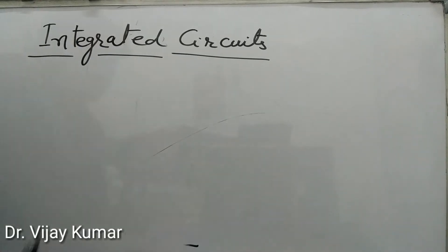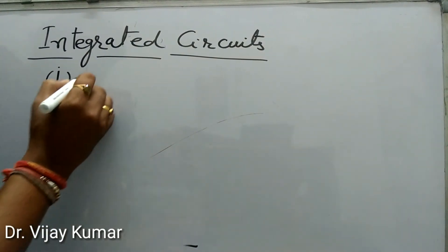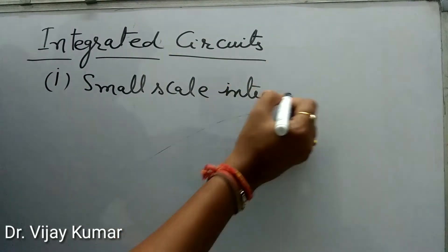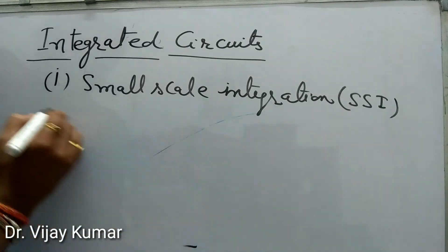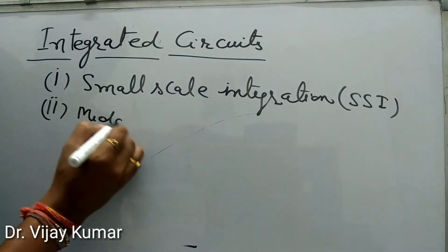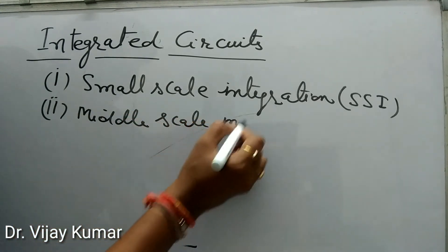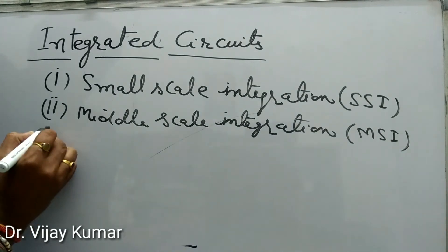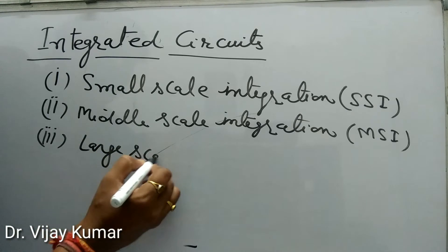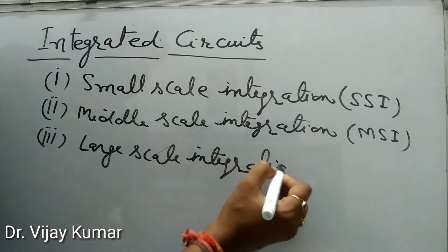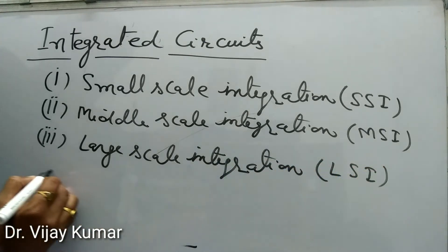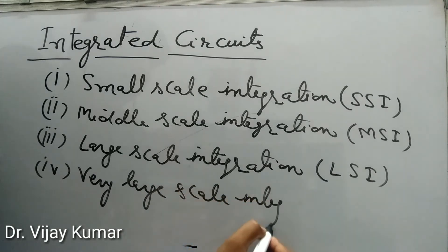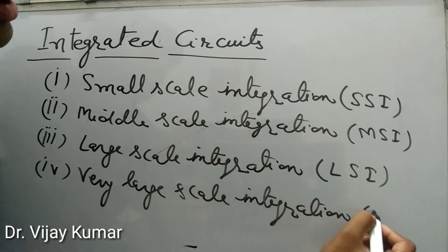The integrated circuits can be divided into the following parts: Number one, Small Scale Integration (SSI). Second, Middle Scale Integration (MSI). Third, Large Scale Integration (LSI). And fourth, Very Large Scale Integration (VLSI).